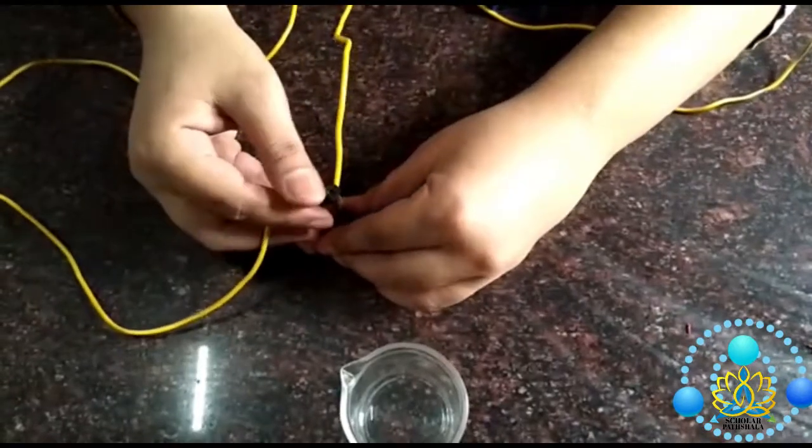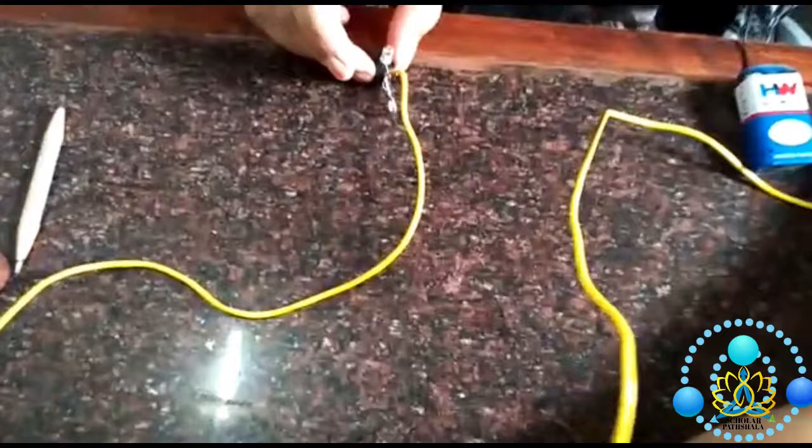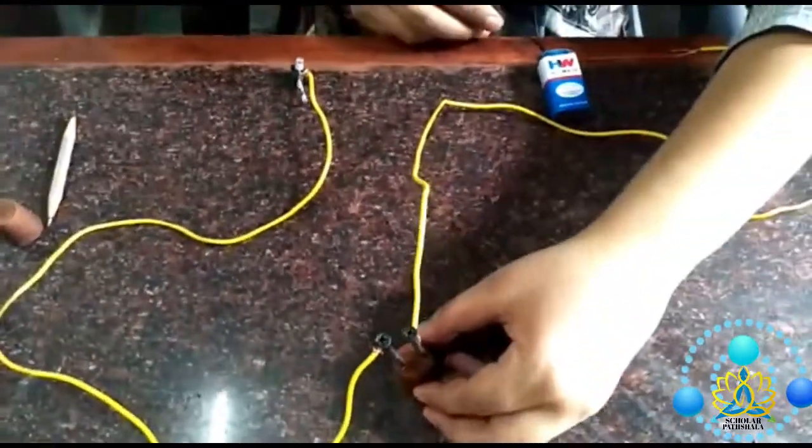Further, these nails are joined with wires and this wire is joined with an LED bulb and this is joined with a battery.